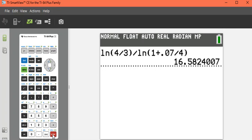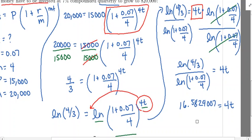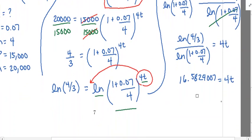We're solving for time — this is a time value, not a dollars and cents amount. So remember what you do: not only do you have to solve for four T, but you also have to round this number up to the next whole number. So the 16.58-something is going to round up to 17. You always round up time to the next whole number.